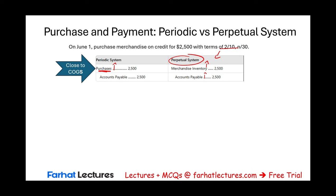Once we get to the closing process, I'm going to close Purchases to income summary. You can close it to cost of goods sold first, then cost of goods sold — being a temporary account — gets closed to income summary. I want you to think of Purchases as a sub-account of cost of goods sold; it's an account related to computing cost of goods sold.